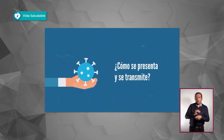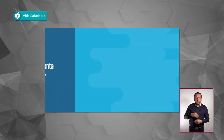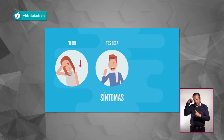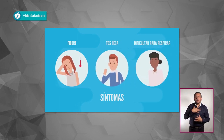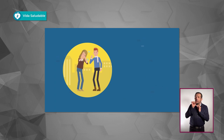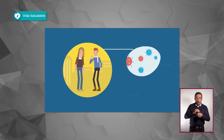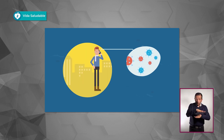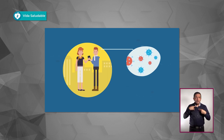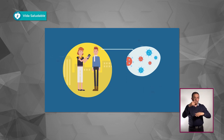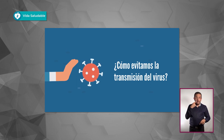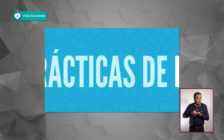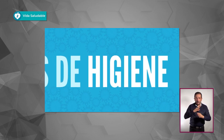¿Cómo se presenta y transmite la COVID-19? Los síntomas pueden ser fiebre, tos seca y dificultad para respirar. El virus se transmite a través de gotículas que salen despedidas cuando una persona con COVID-19 tose o exhala. Estas gotículas pueden caer sobre objetos y superficies, de modo que otras personas pueden contraer la COVID-19 si los tocan y luego se tocan la cara.